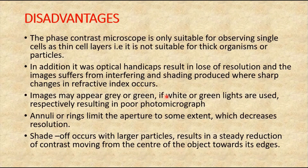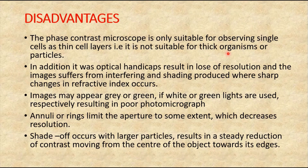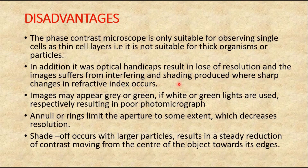Moving to the disadvantages or limitations: the phase contrast microscope is only suitable for observing single cells when present in a thin layer. If the organisms or preparation are thick, they cannot be observed through this microscope. In addition, its optical characteristics result in loss of resolution, and the image suffers from interference and shading produced where abrupt changes in the refractive index occur. Images may appear gray or green if white or green lights are used respectively, resulting in poor photomicrographs.